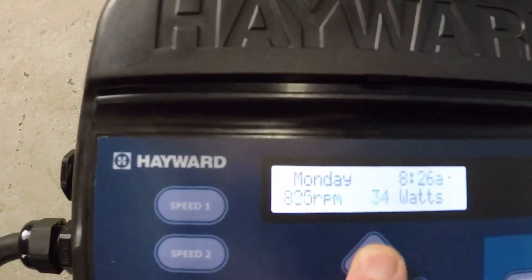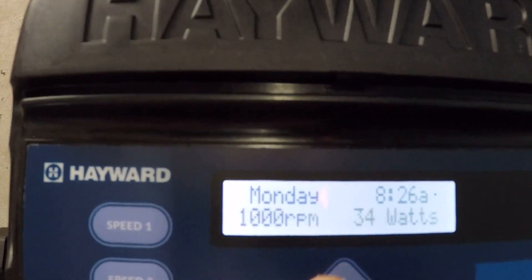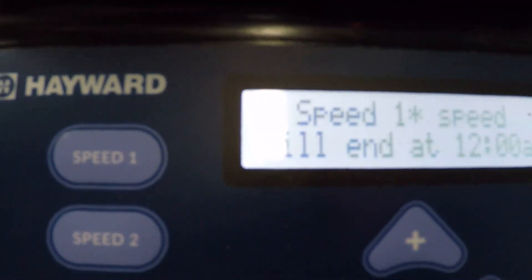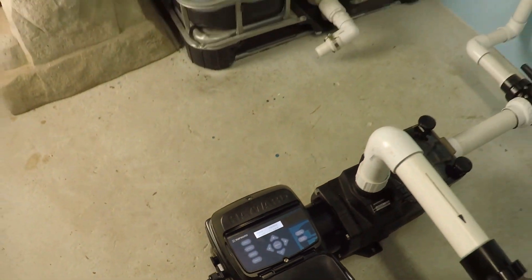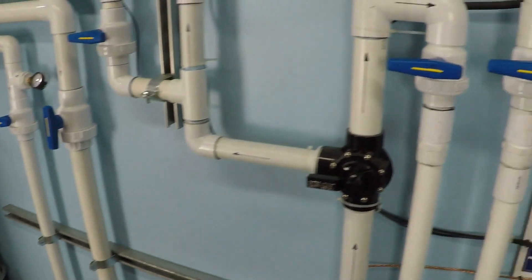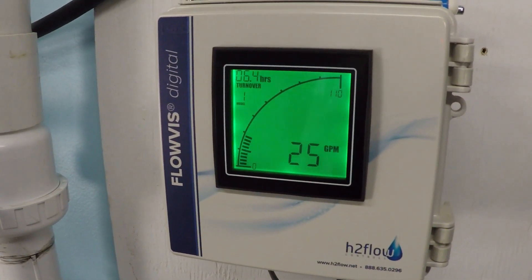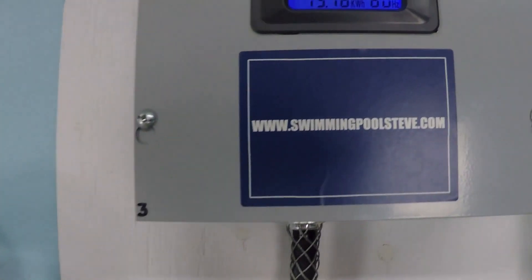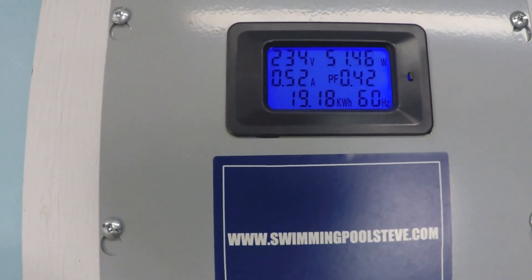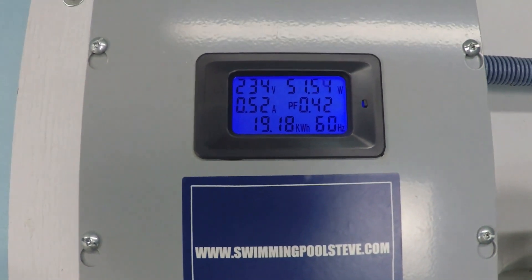All right, so now we're going to jump up to 1,000. 1,000 rpm. 25 gallons per minute. 51 watts.